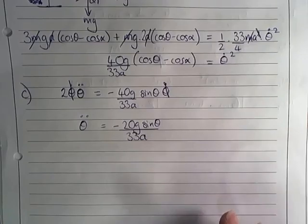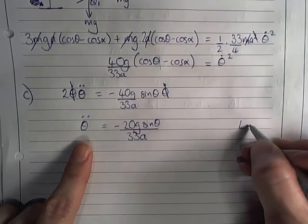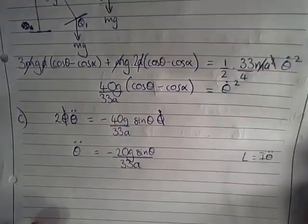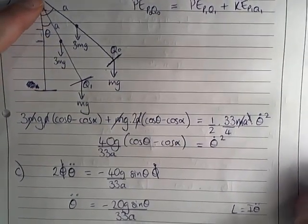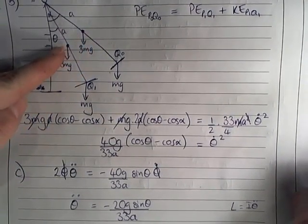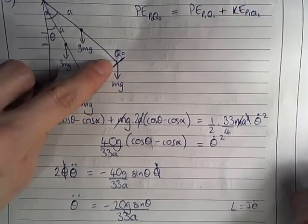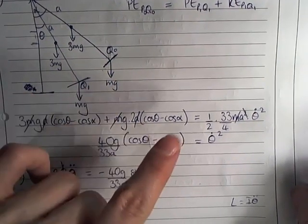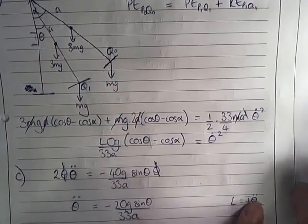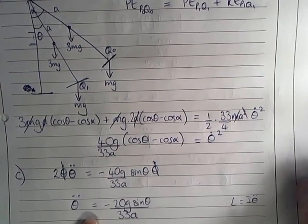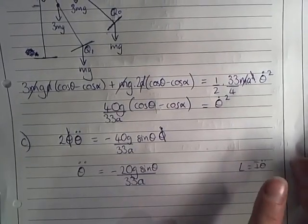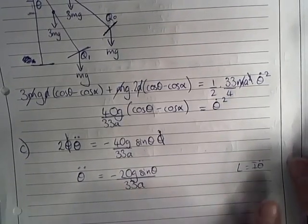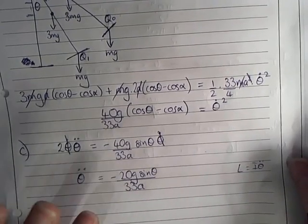Now the alternative to this would have been to use L equals I theta double dot, L being the moment of the resultant force. So you could have got that by doing a multiplied by 3mg sine theta plus 2a multiplied by mg sine theta, both of those negative, equals I, the I that you got from the previous bit of the question, multiplied by theta double dot. So you could have got to the same result using this, but as you already had this equation, it was perhaps a bit quicker to do this rather than writing down the equation of rotational motion right from scratch.